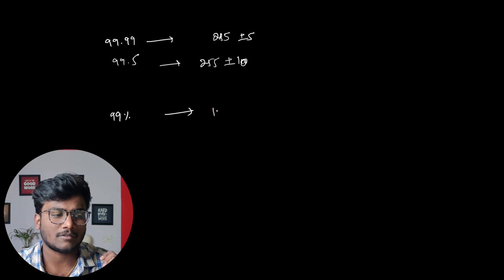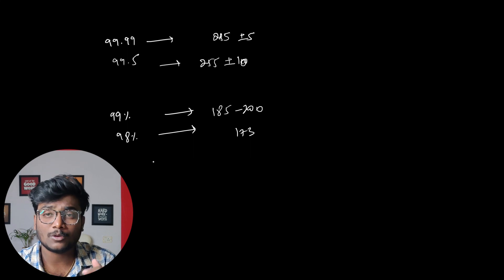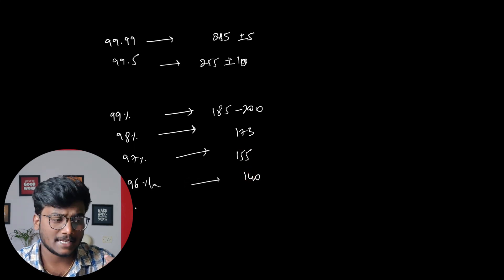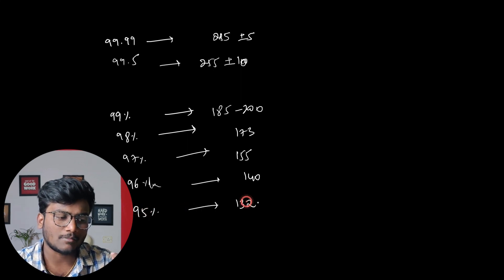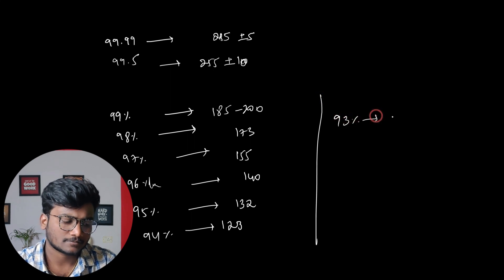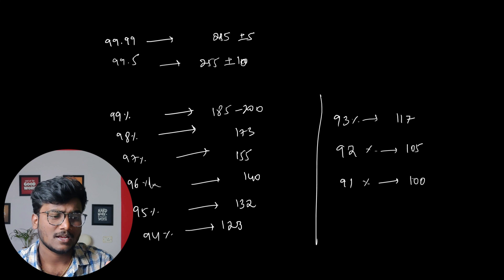And 98 percentile, my expected cutoffs would be 173. So that is my 98 percentile, whoever is having 173, you can expect that you can get around 98 percentile. So for 97 percentile, I would say somewhere around 155 would be the score. So whoever is having somewhere around 140, you can expect 96 percentile. For 95 percentile, whoever is having around 132 marks, you can expect 95 percentile. And for 94 percentile, whoever is having around 123, something like that, you can expect 94 percentile. And for 93 percentile, whoever is having somewhere around 117, that can be 93 percentile. And for 92 percentile, somewhere around 105 can be 92 percentile. And 91 percentile would be around 100, in the range of 100. And coming to 90 percentile, it can be around 87 to 93.